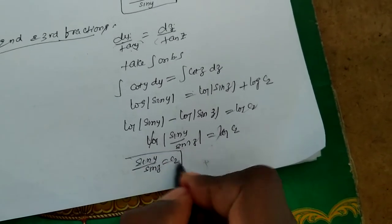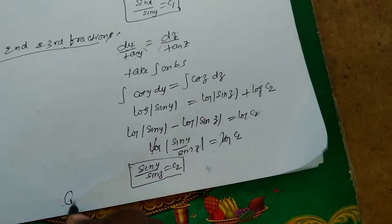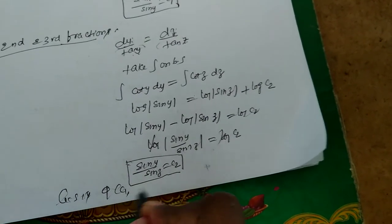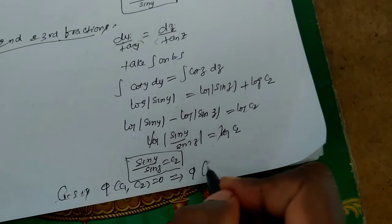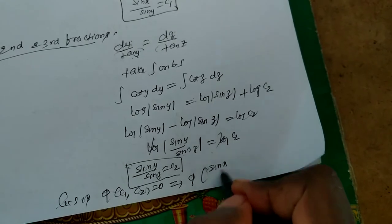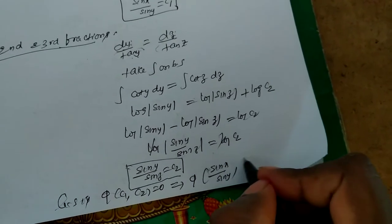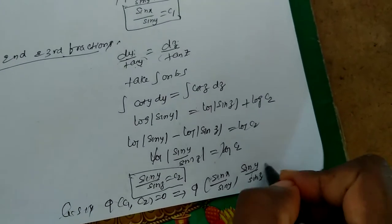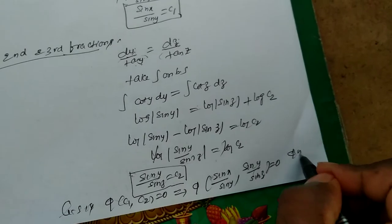After finding the two linearly independent solutions, we write the general solution as phi of c1 comma c2 equal to 0. That means phi of sin x by sin y comma sin y by sin z equal to 0, where phi is an arbitrary function.